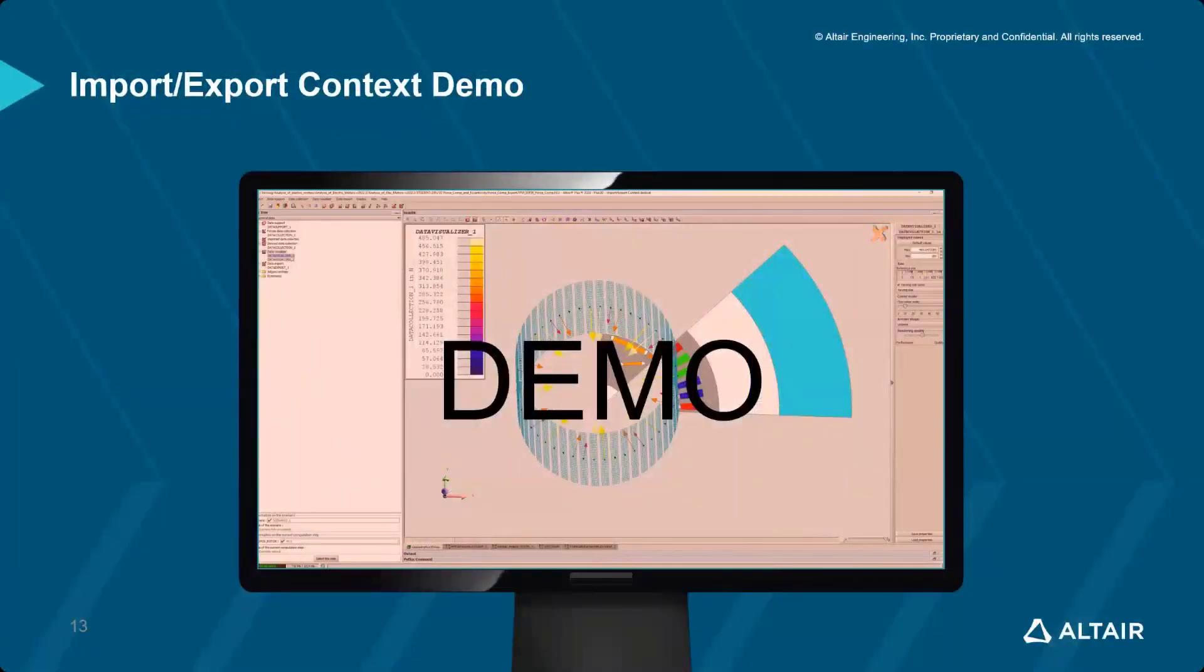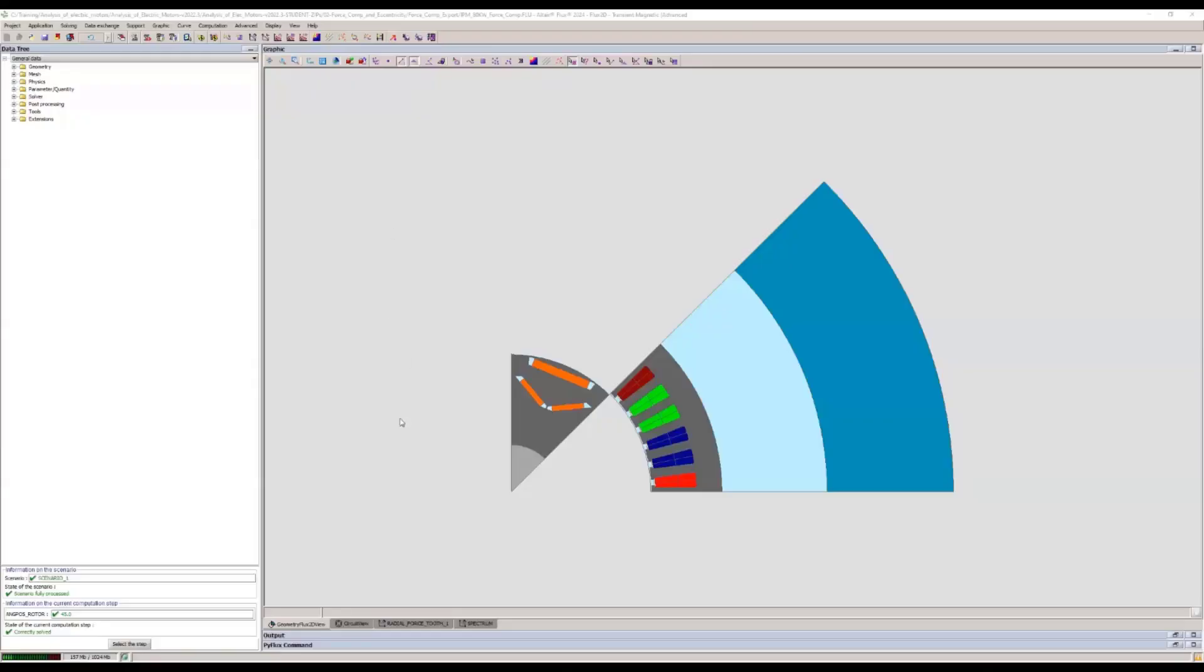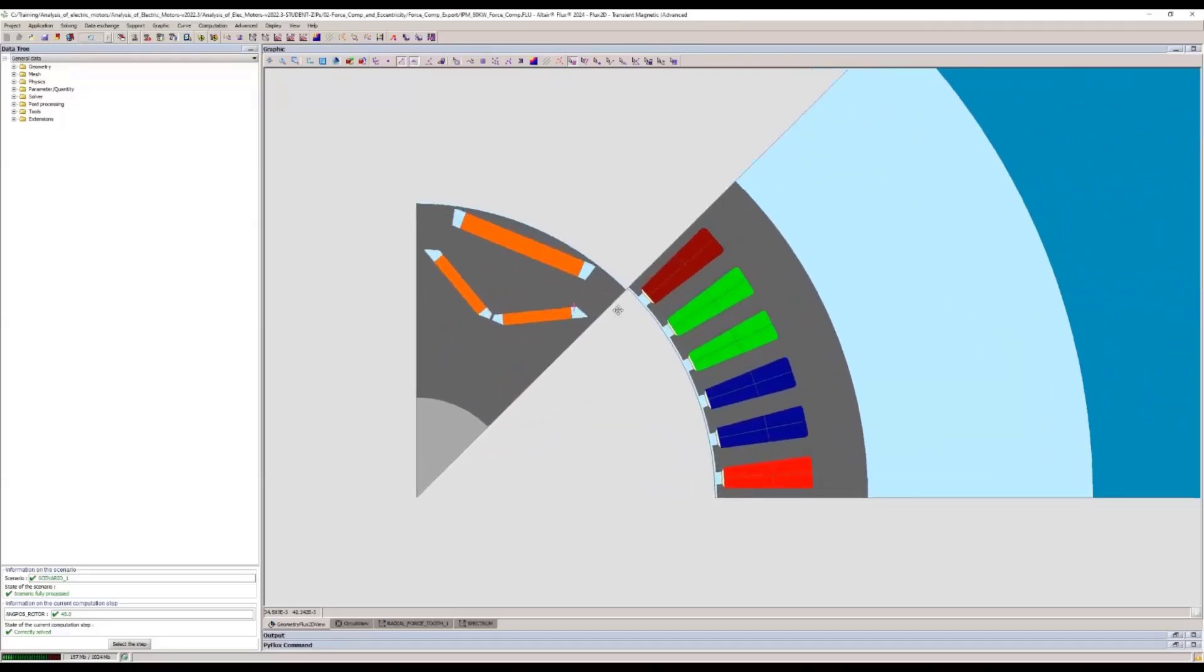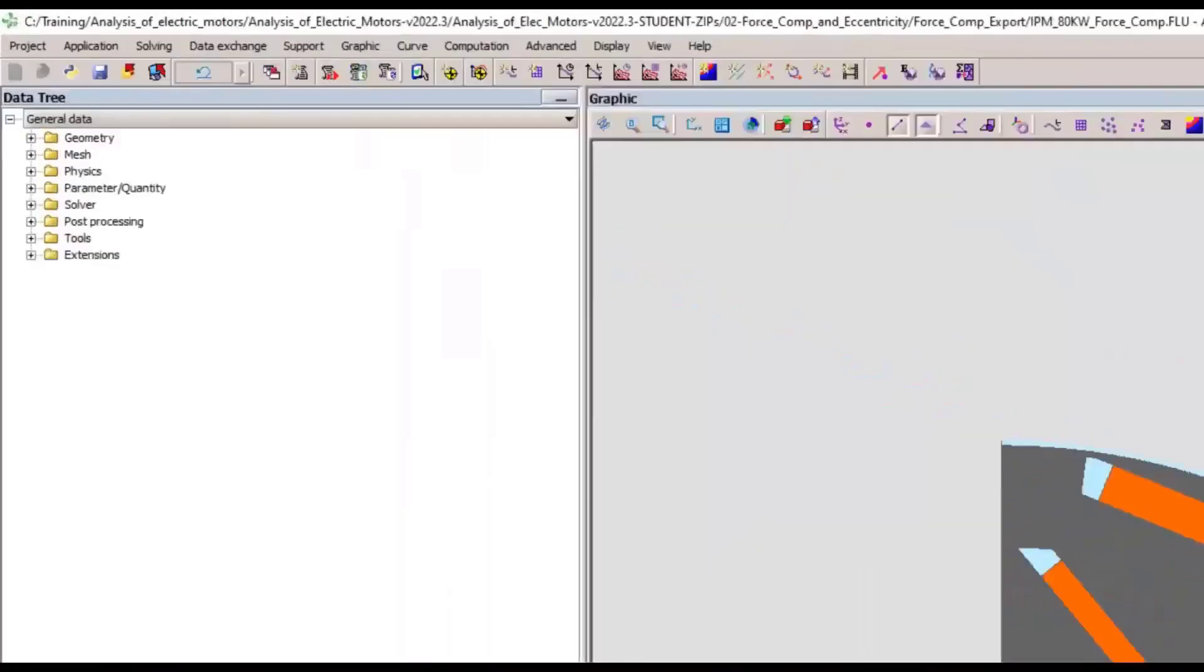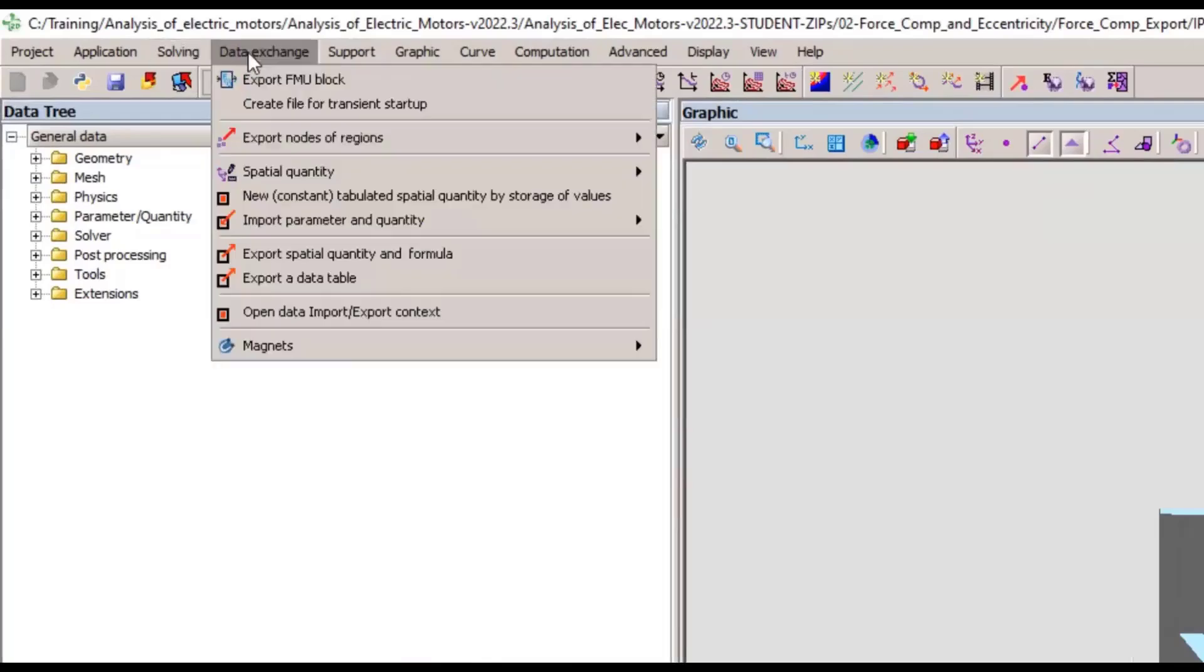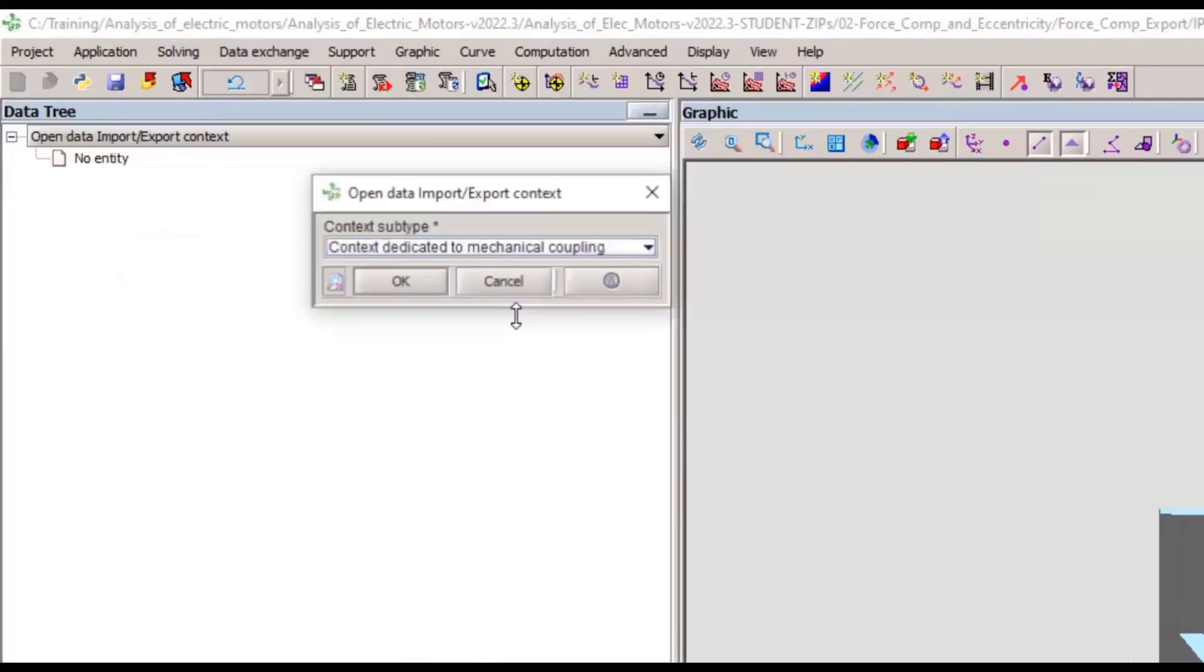So let's have a look at a quick demo, how we can apply this on the motor. So here we have an IPM motor, and we're going to open this import-export context from the data exchange menu. So when you open it, you have a choice of which type you want to offer. So it's more like a filter when you open the context. So let's choose mechanical.